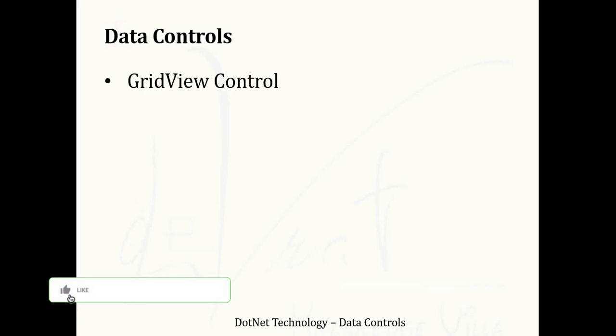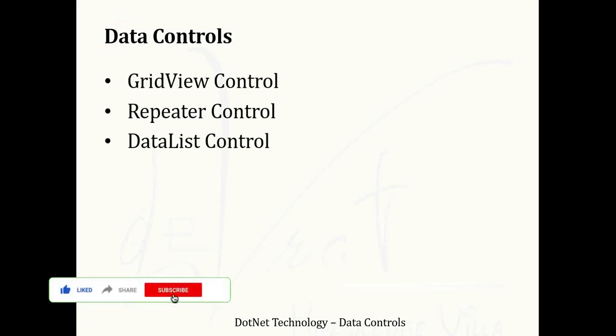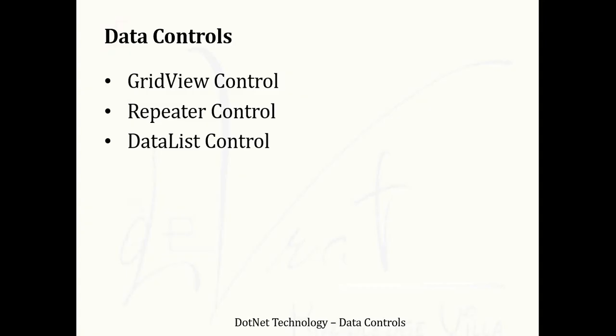Welcome to the .NET technology video series. Today we will understand the concept of data controls. Data bound controls are used to display data from the database. We will understand three data controls: GridView control, Repeater control, and DataList control. These three controls are used to display data from the database, but based on user requirements there are some minor differences between them.